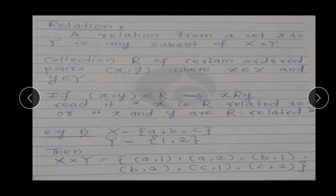Relation के लिए important thing क्या है? कोई भी दो elements का होना ज़रूरी है, कोई भी दो persons का. क्योंकि relation को हम किसी भी दो लोगों के दर्मियान define करते हैं. जैसे अभी मेरे बीच में और आपके बीच में relation क्या है? एक teacher और student का. Similarly, आपके parents के साथ में आपका relation क्या है? Either father and son, or mother and daughter. तो यहाँ पर relation के लिए important thing दो persons या दो elements का होना ज़रूरी है.